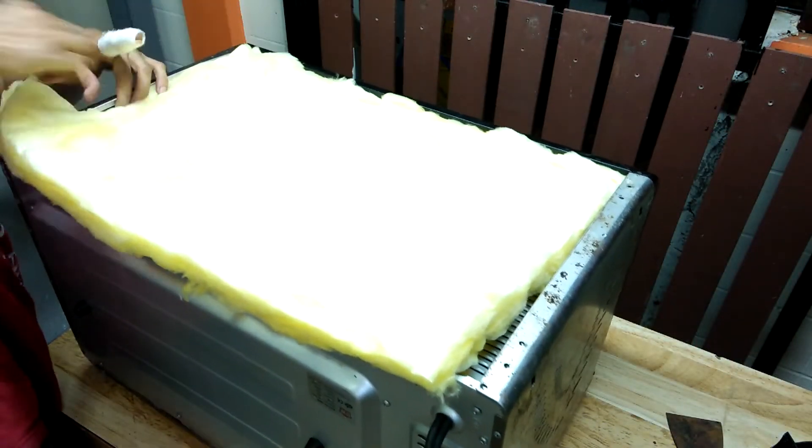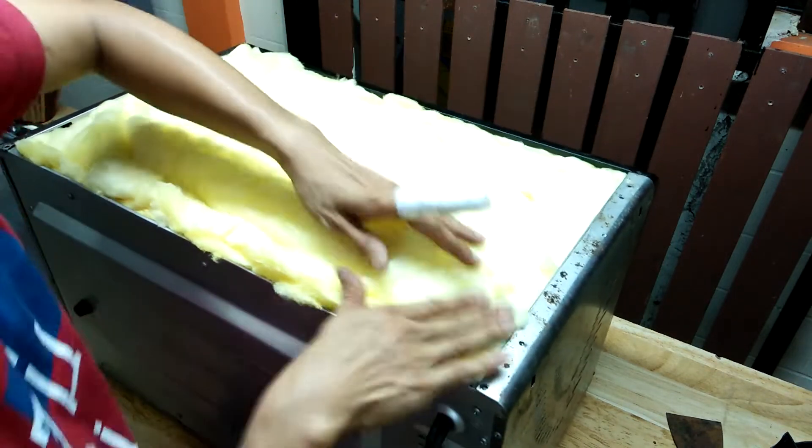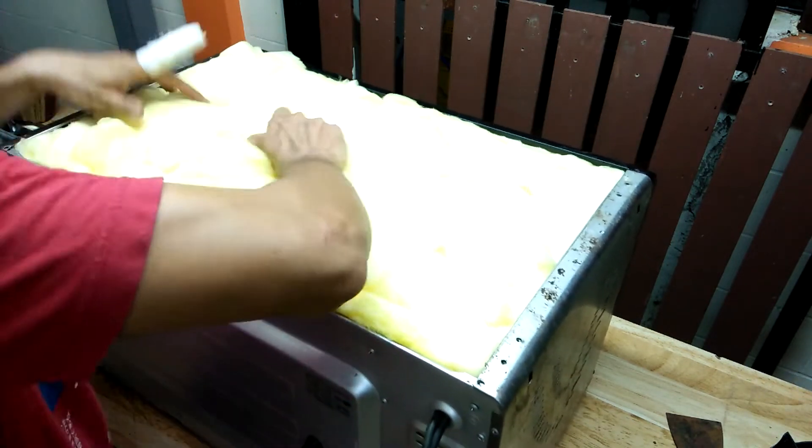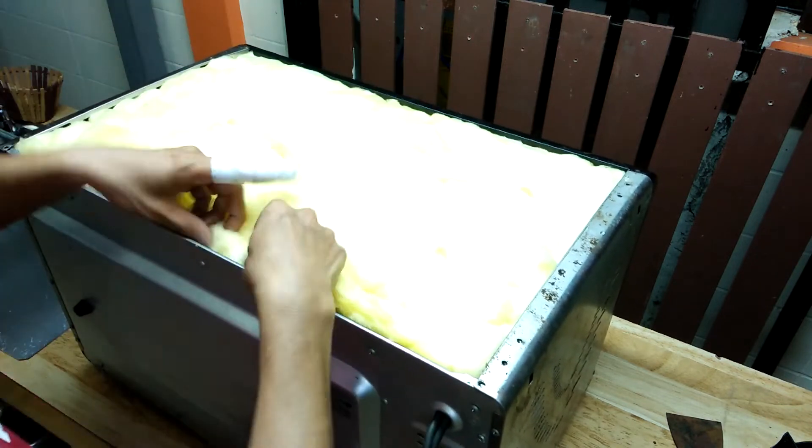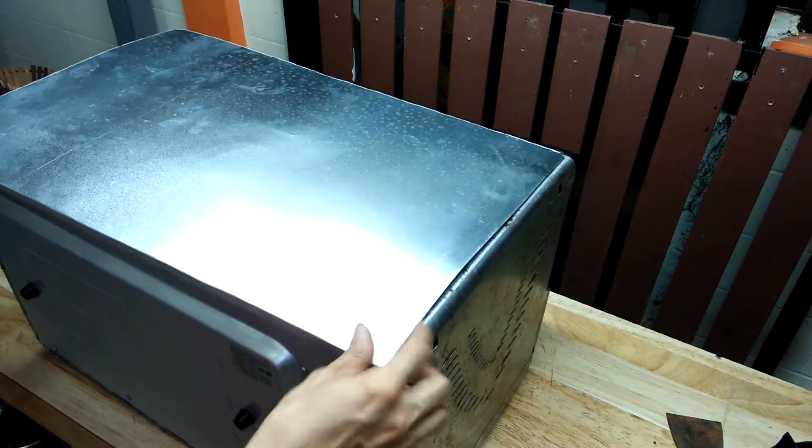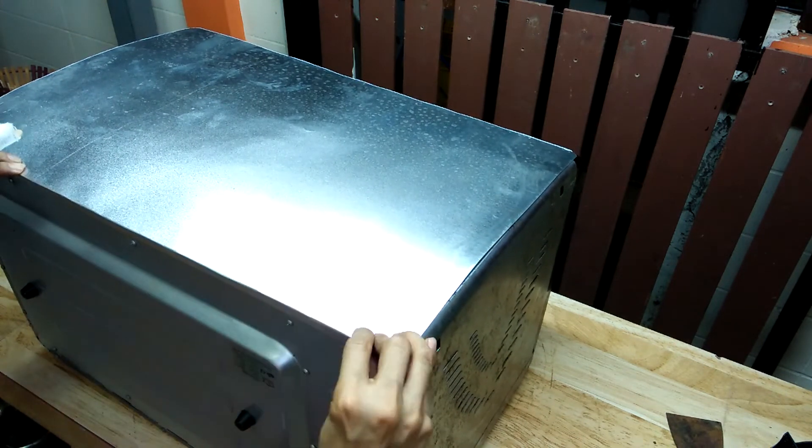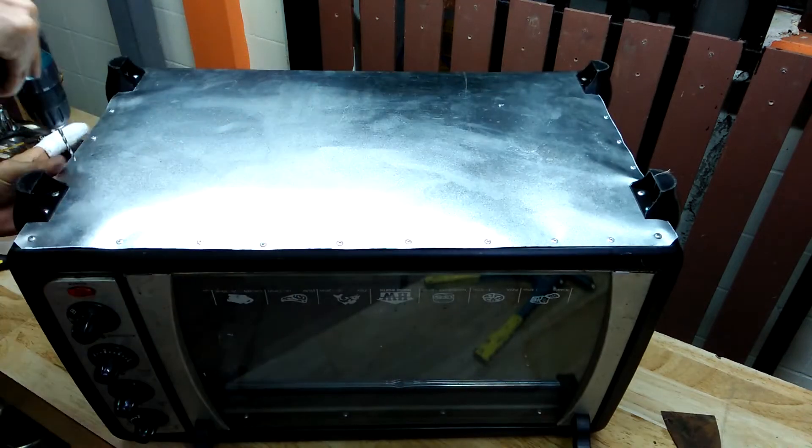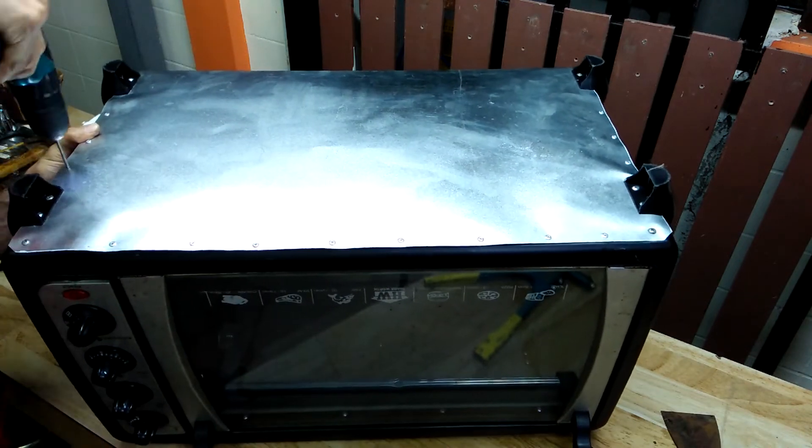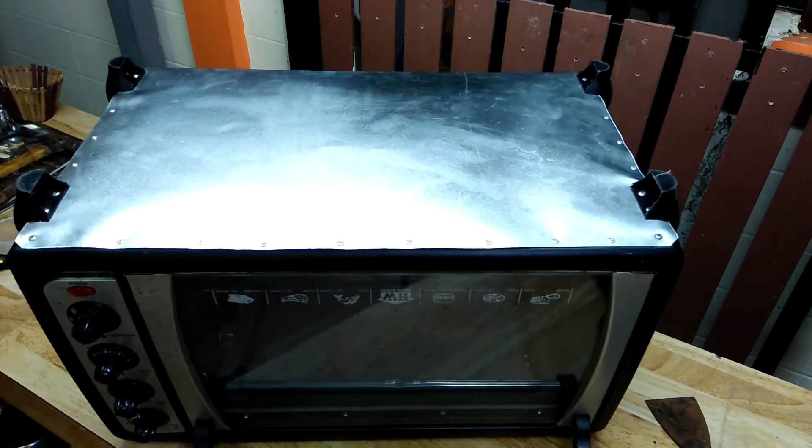The bottom of the oven also got stuffed with fiberglass before I finally covered it with the sheet metal I cut to size earlier. I then simply rivet it in place. It's not pretty, but it's on the bottom and nobody can see it anyway.